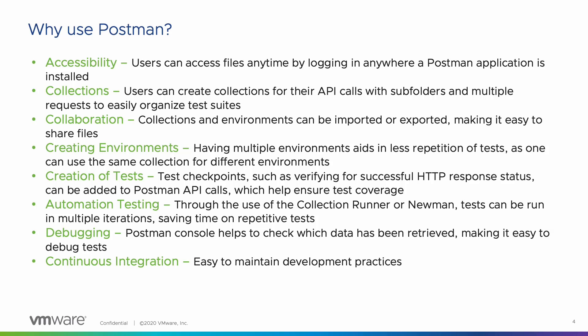Creation of tests: test checkpoints, such as verifying for successful HTTP response status, can be added to Postman API calls, which help ensure test coverage. Automation testing: through the use of the collection runner or Newman, tests can be run in multiple iterations, saving time on repetitive tests. Debugging: the Postman console helps to check which data has been retrieved, making it easy to debug tests.